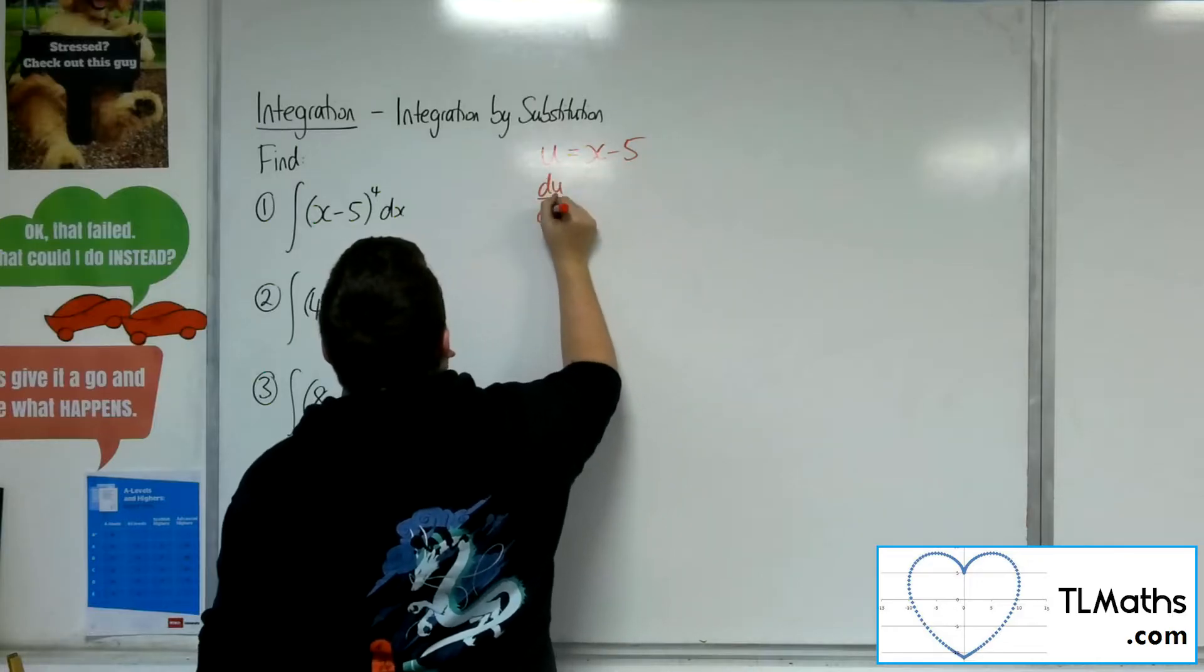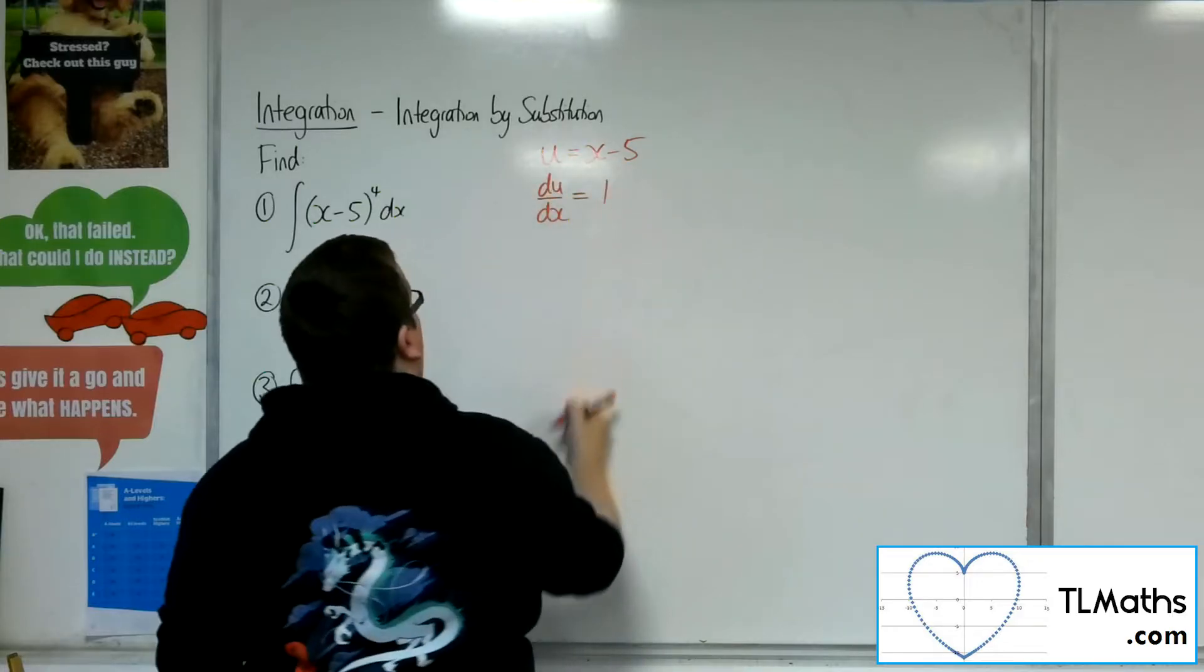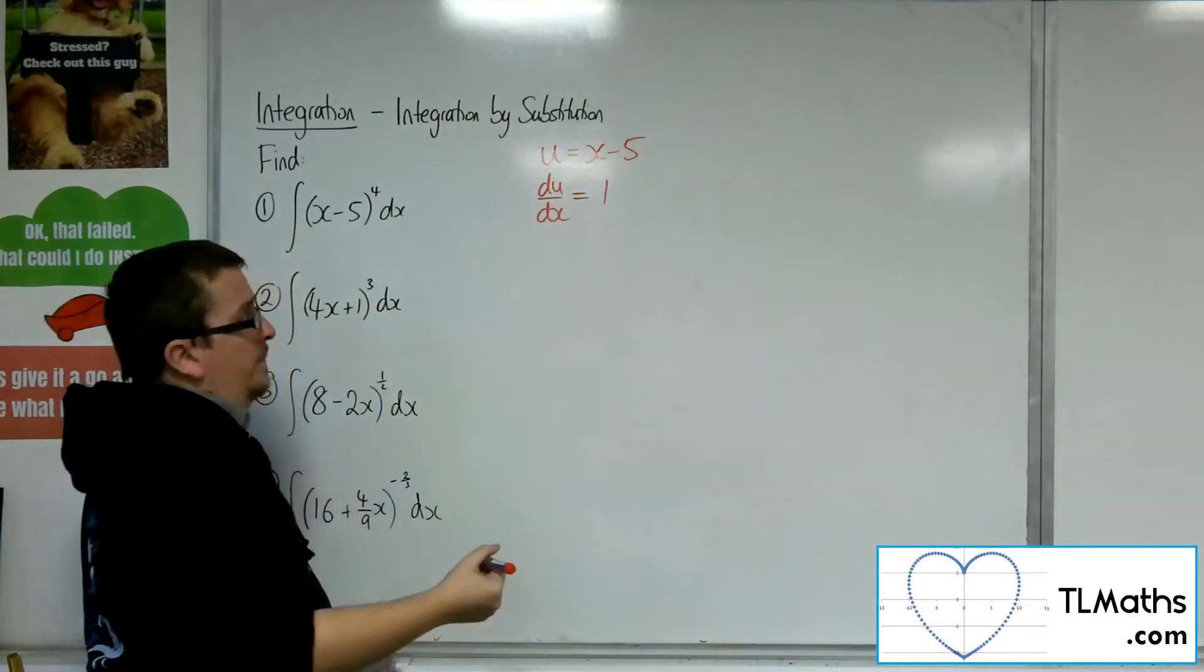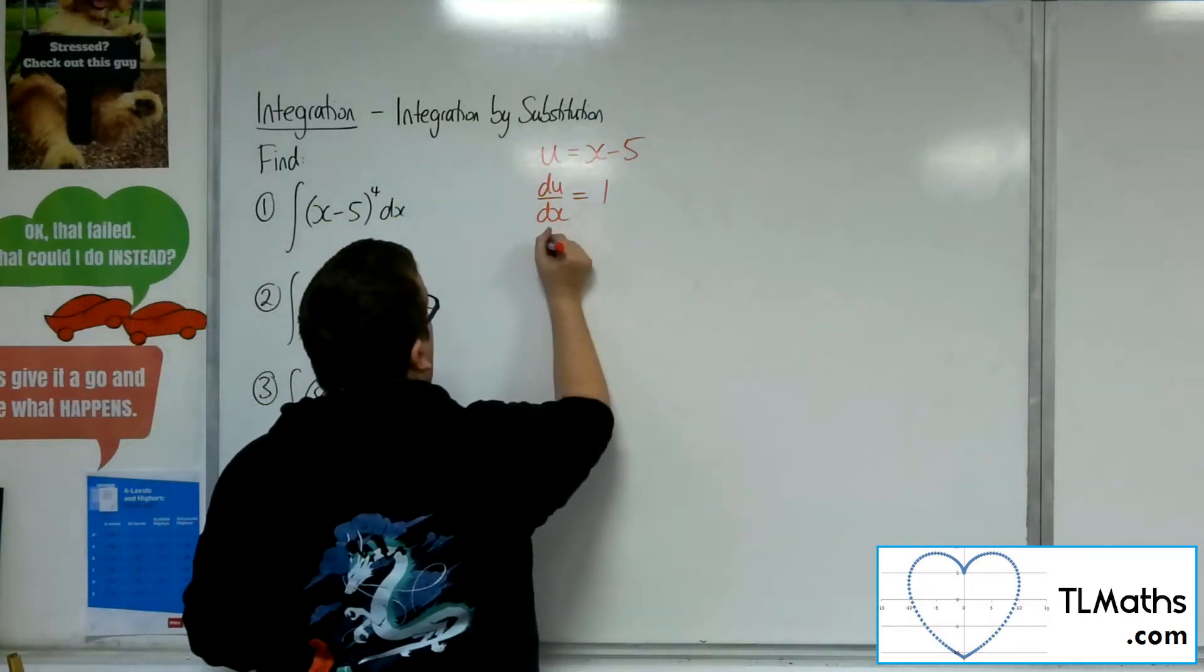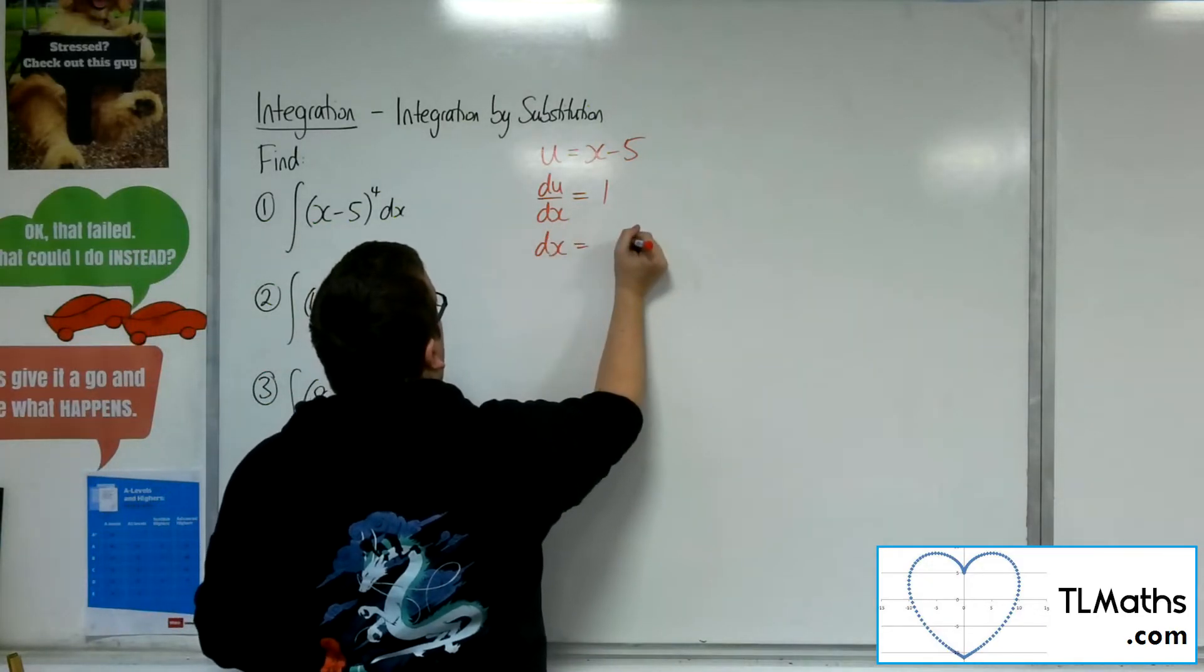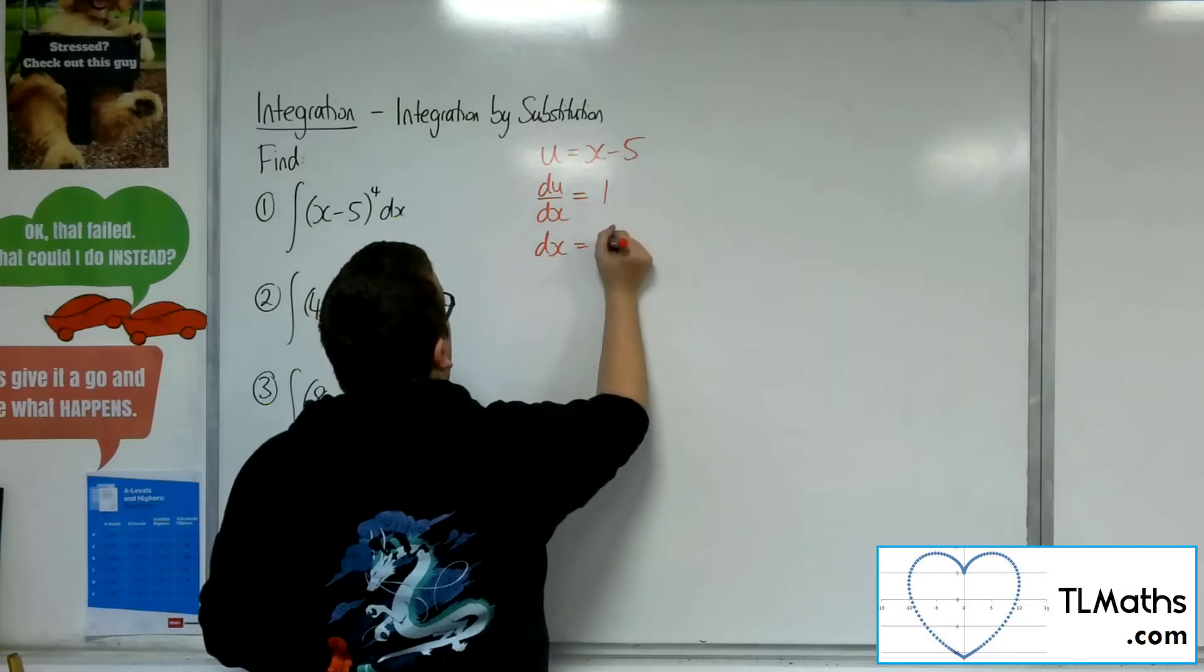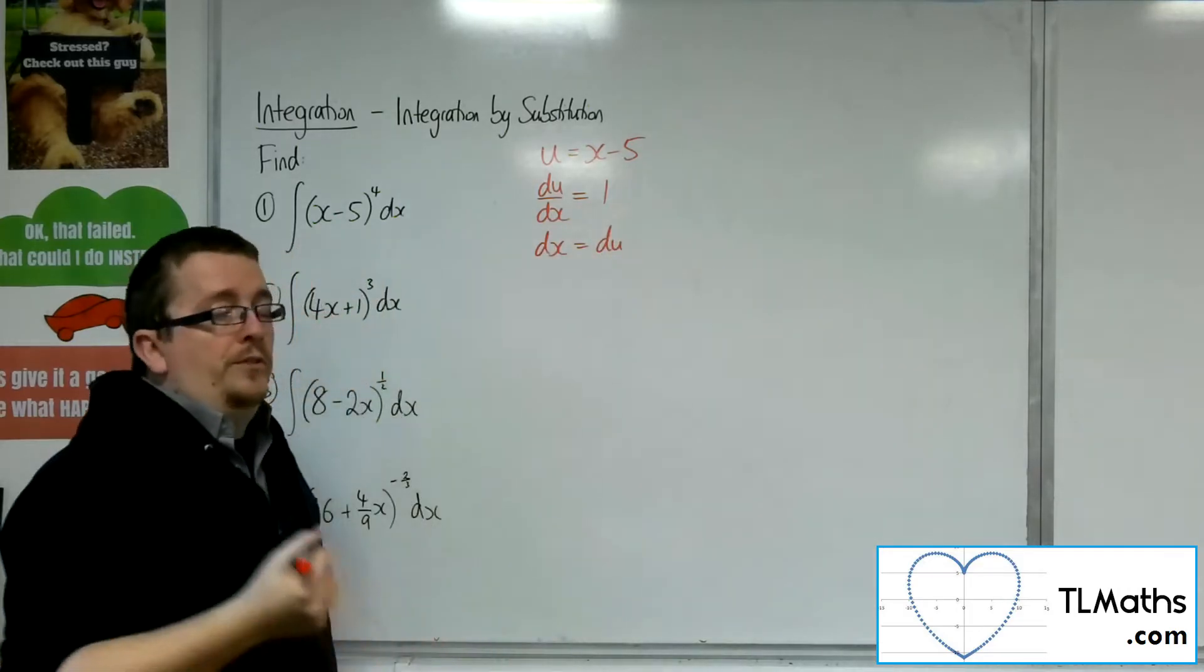So if you differentiate that, that's always the first step to get du by dx, which is 1. So differentiate the substitution, and then rearrange that to get dx equals. So multiply both sides by the dx, and you get dx is equal to du.